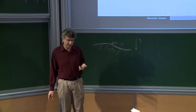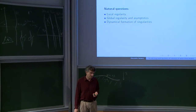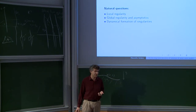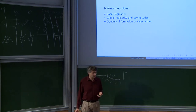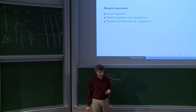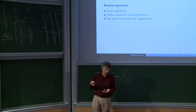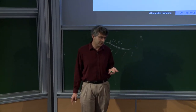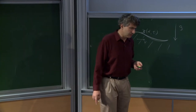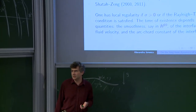It turns out one can make sense of this as a well-posed evolution system. One can raise at least three basic questions: first, local regularity — can we construct solutions locally in time from nice initial data? Second, global regularity — can we construct solutions that extend for a long time? And third, dynamical formation of singularities — starting with nice data at time zero, can we form a singularity beyond the local existence time? Most of my talk will be about this last point.